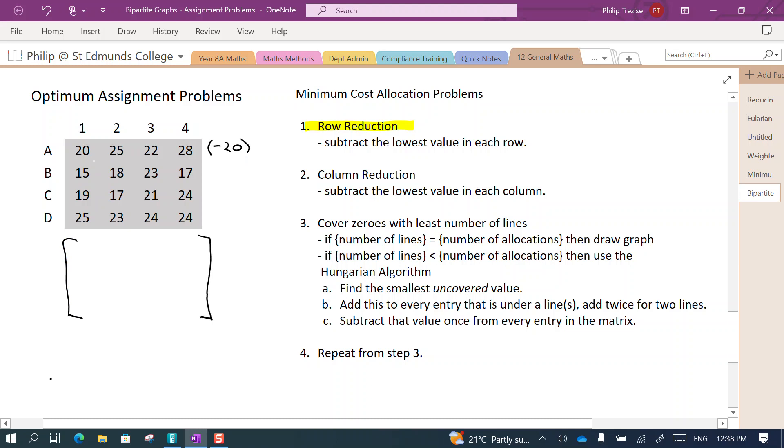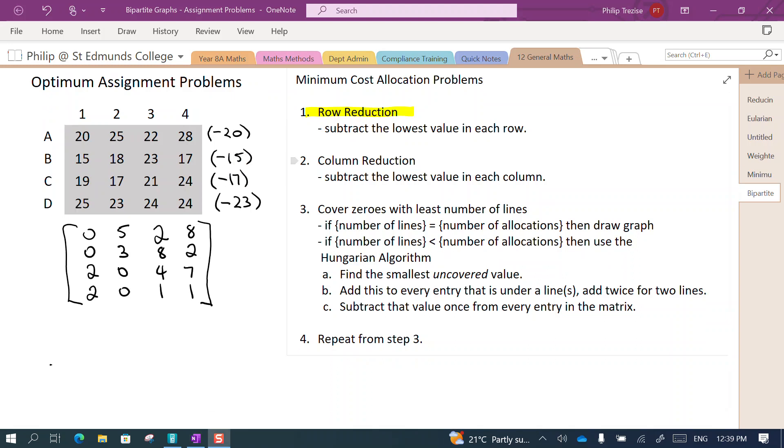So the first one would be zero, then five, then two, and then eight. In the next row the lowest number is the number 15, so we keep going like that. I'll just pause for a moment while I fill in the rest. Okay, so that's all the rows reduced. We call this the reduced row matrix.